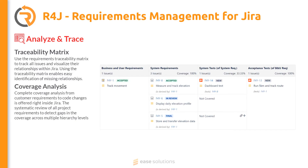To go deeper and analyze more levels at one time, R4j offers the coverage analysis. This view shows customer requirements, specifications, and customer acceptance tests in one table. This table also includes the relations between all the items.